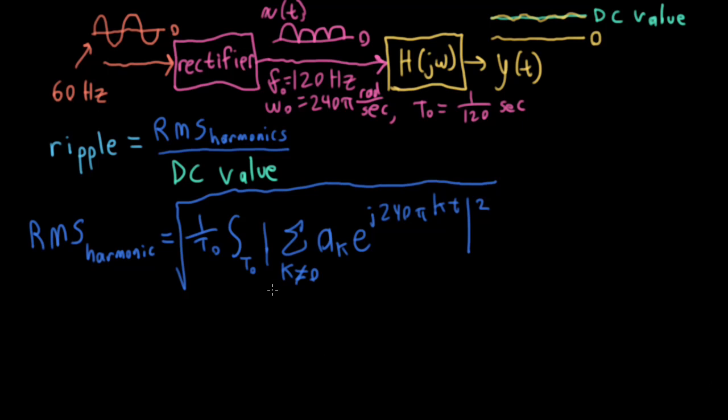Now, what is all of the stuff in here, really? Well, this is the function minus the DC value. So essentially, what this is here is x(t) - a₀. So the way I've written it here, this is the ripple you would get if you didn't have any filtering at all. So let's first see how bad that is, and then we can see what happens when we put in the filter.